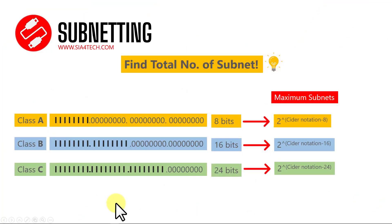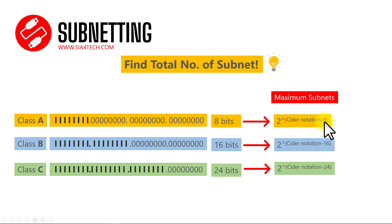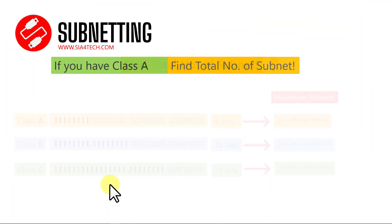Now let's find the total number of subnets. For finding the maximum number of subnets, you need to know the IP address class. In Class A, the first octet has 8 bits on; in Class B, 16 bits; in Class C, 24 bits. The formula is: maximum subnets = 2 to the power of (CIDR minus 8) for Class A, minus 16 for Class B, and minus 24 for Class C.